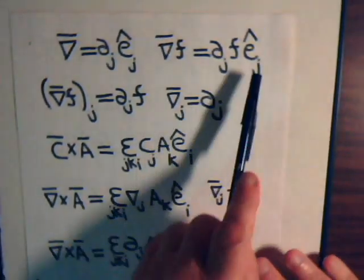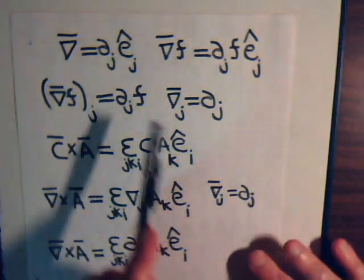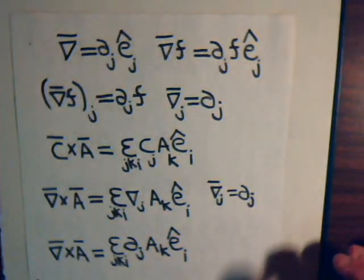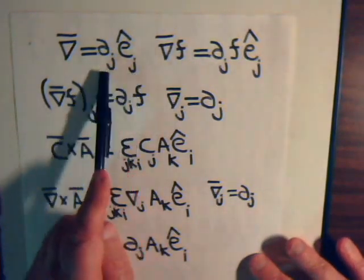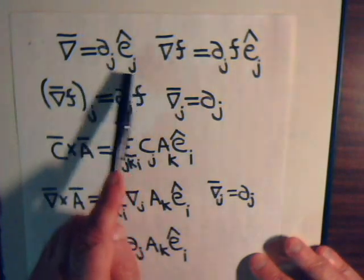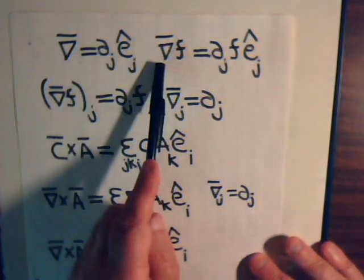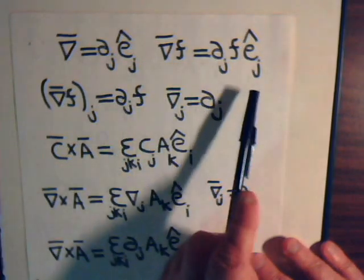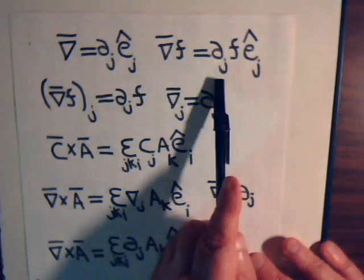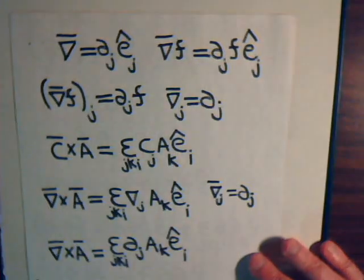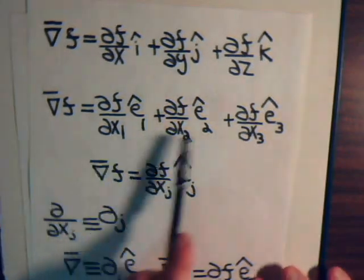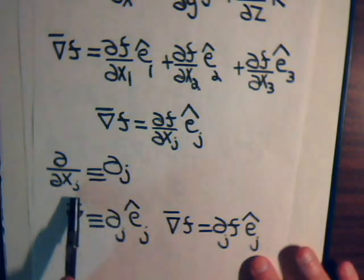So we have those two results written up here. The del operator we can express as partial_j · e_j, because all we're doing is taking partial derivatives — three of them, operating in three-dimensional space. The del operator acting on a scalar f takes these partial derivatives and multiplies by the unit vector, summed over j equal to 1, 2, and 3, remembering that partial_j means partial with respect to x_j.